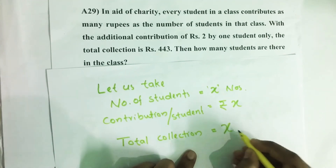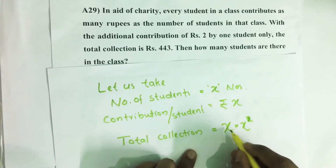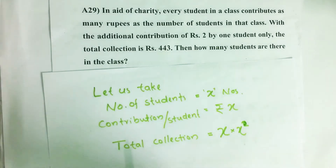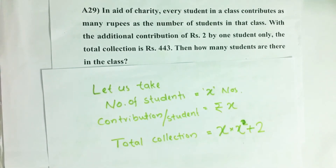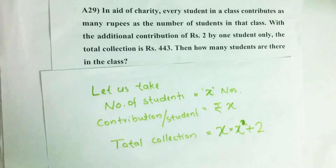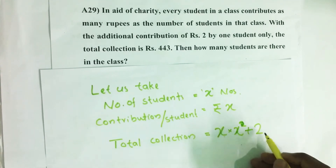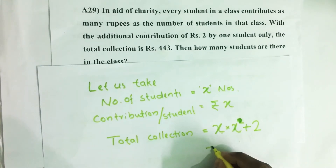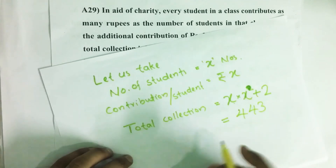Then total collection equals number of students multiplied by each student's contribution, which is X into X. It is said that one student gives two rupees extra along with X — an additional two rupees. So the total collection becomes X into X plus 2. It is given that the total collection of the class equals 443.